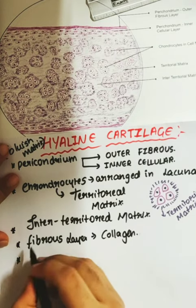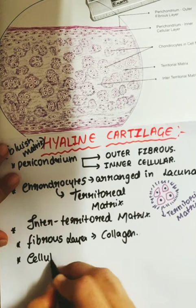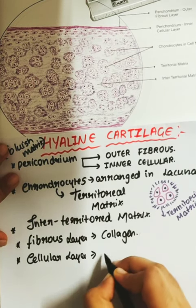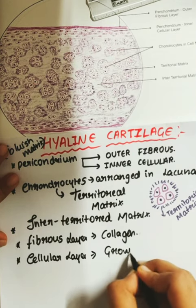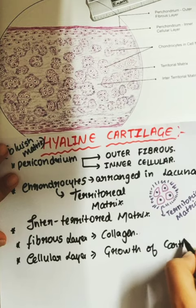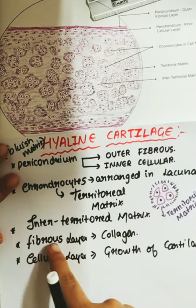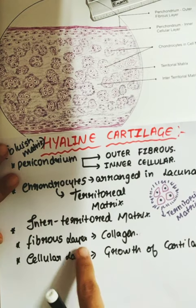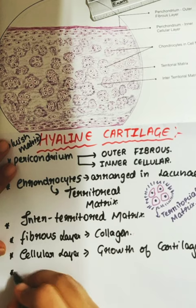The fibrous layer is made up of collagen. The other layer is the cellular layer, which helps in the growth of cartilage. So the outer fibrous perichondrium is made up of collagen, and the inner cellular layer mainly helps in the growth of cartilage.